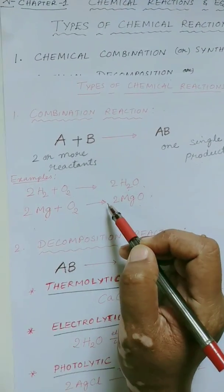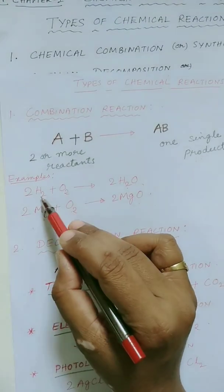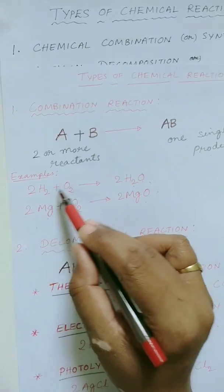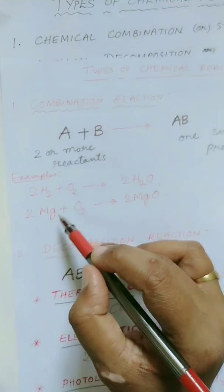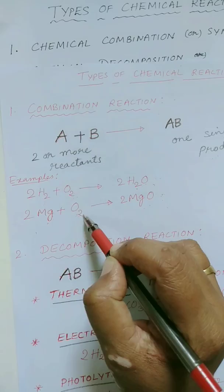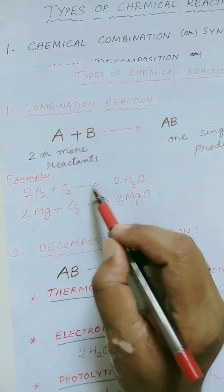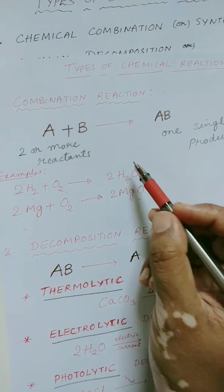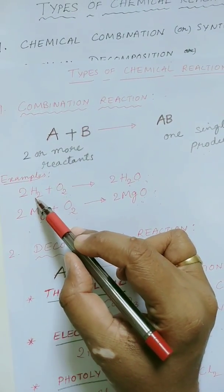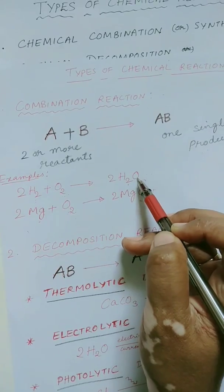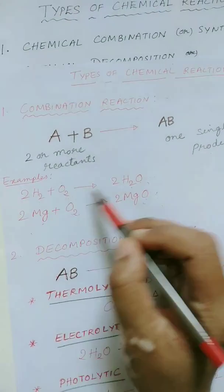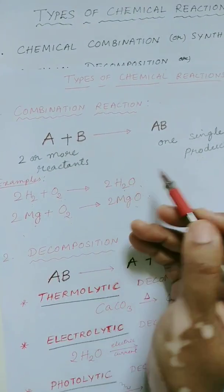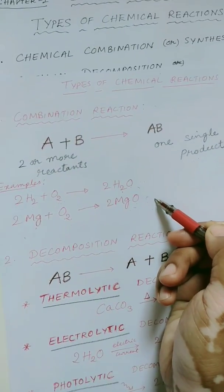One more thing to notice in these two examples is that both the reactants are elements. Hydrogen is an element, oxygen is also an element. Magnesium is an element, oxygen is also an element. Both the elements combine to form a compound. But it doesn't always mean that only elements combine to form a compound. There are examples where even compounds combine to form a different, new compound.